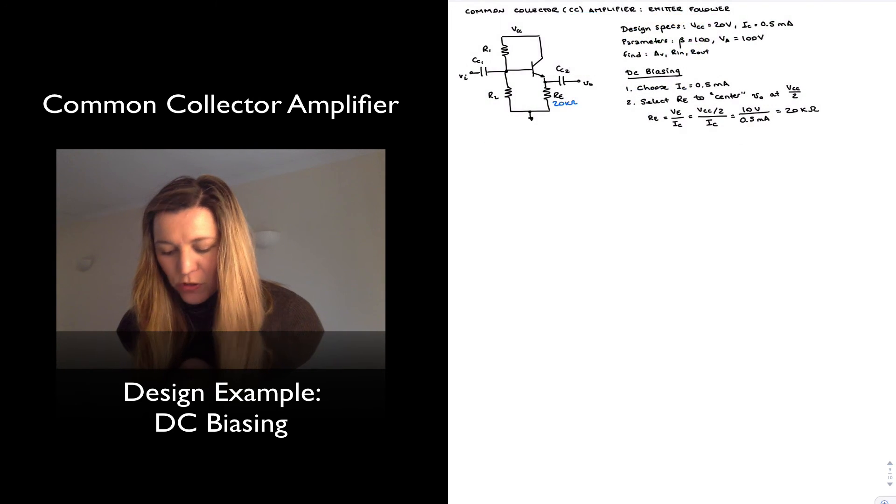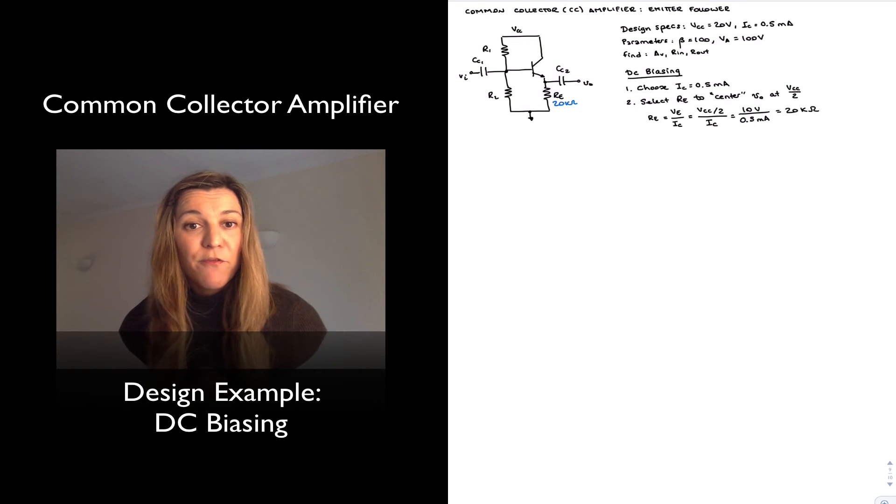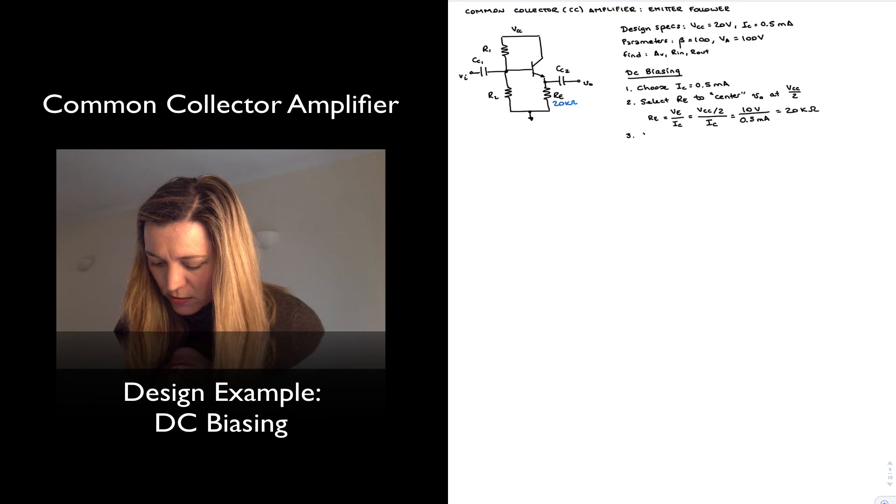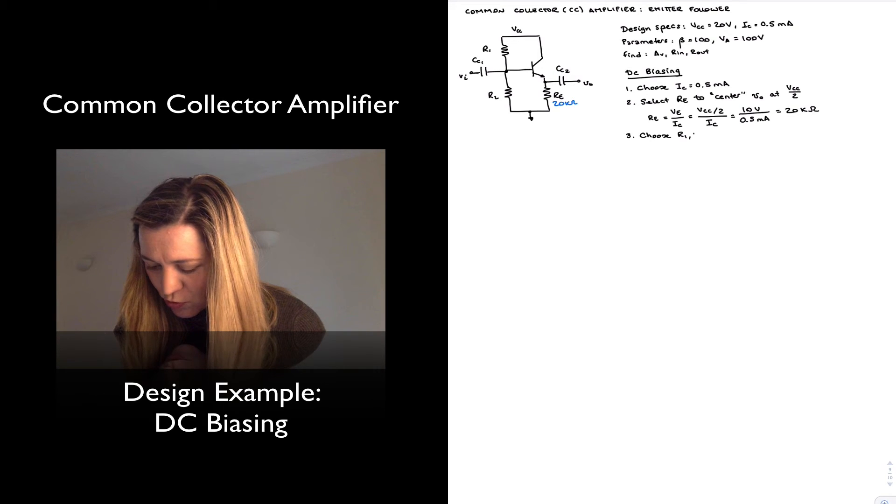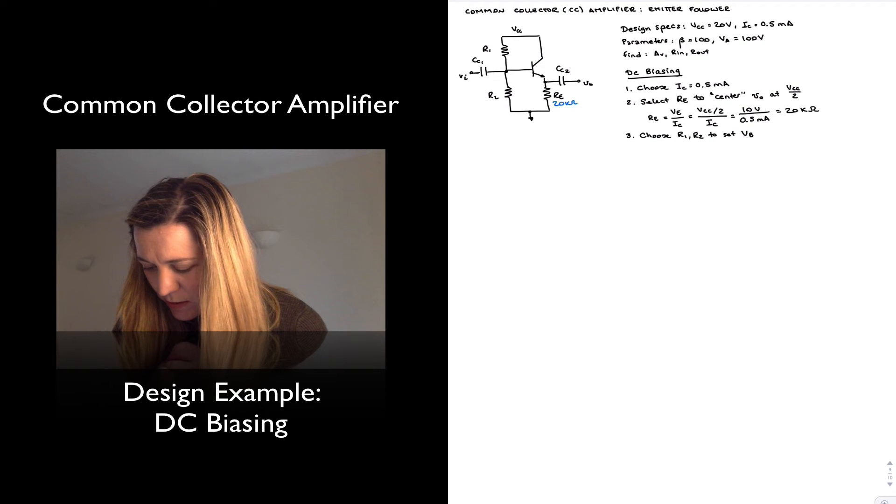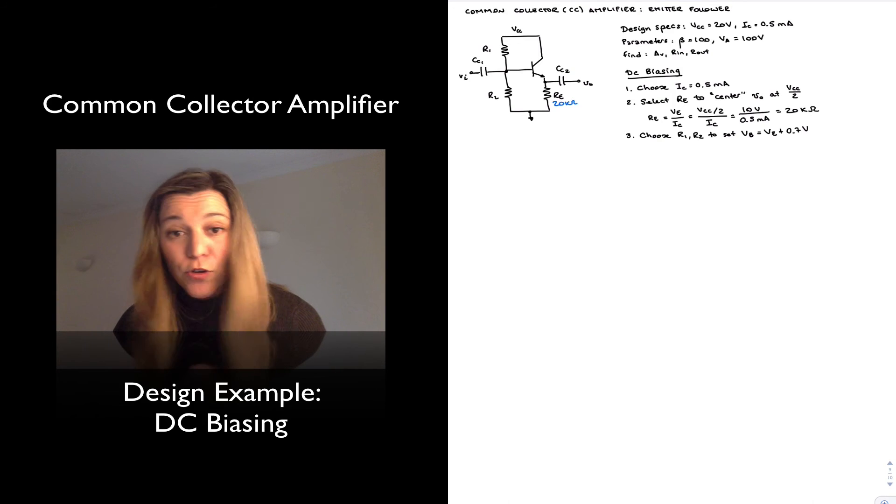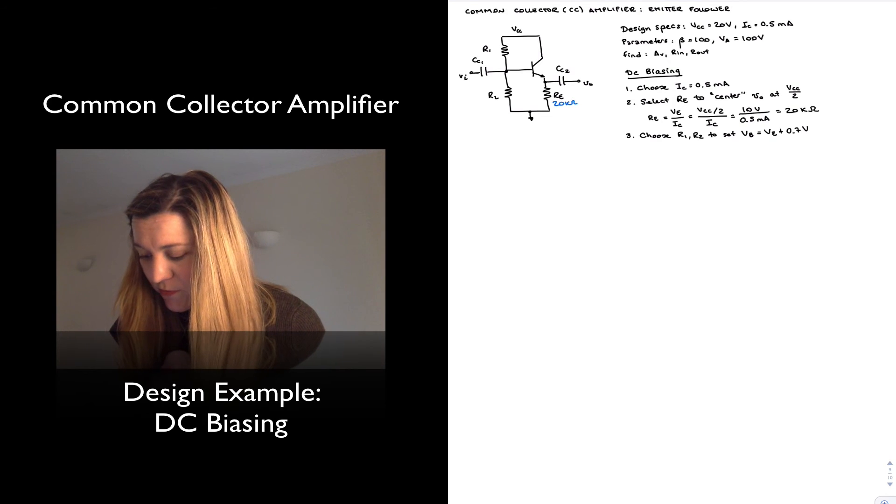Next, I'm going to select values for R1 and R2. In order to have my transistor turned on, I will want my base voltage to be sitting at 0.7 volts higher than the emitter voltage. So I'm going to choose R1 and R2 to set VB equal to Ve plus 0.7 volts, or in this case, 10.7 volts.